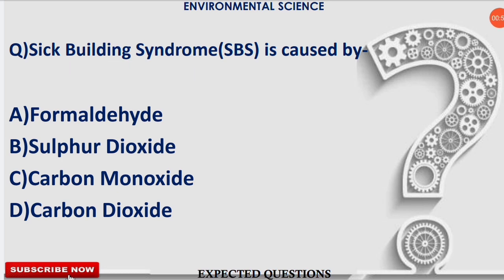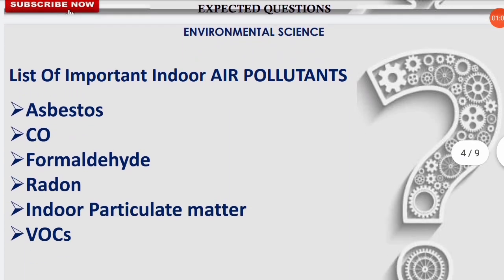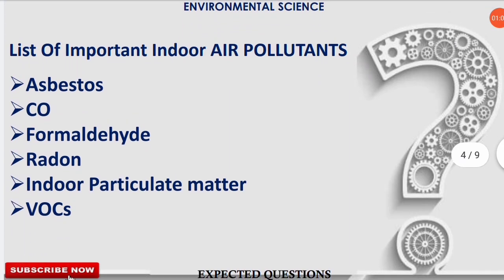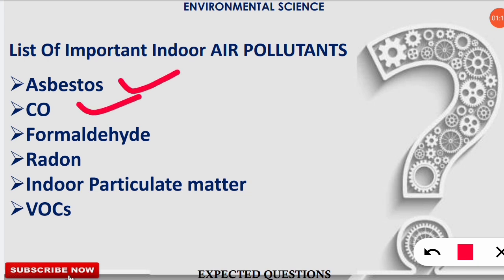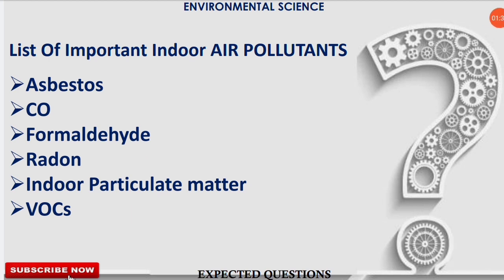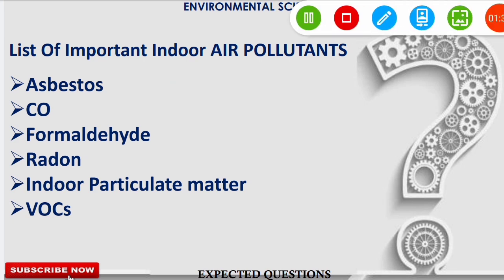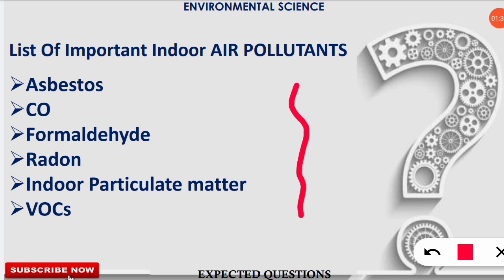Now, talking about indoor pollutants, let's look at the important list of indoor air pollutants. The important indoor pollutants are: asbestos, carbon monoxide, formaldehyde, radon, indoor particulate matter, and volatile organic compounds (VOCs). Most students know about outdoor air pollutants, but this list of indoor pollutants is very important from an examination point of view.